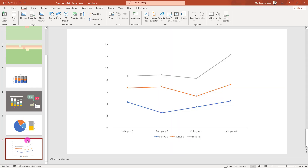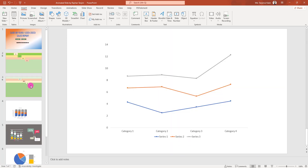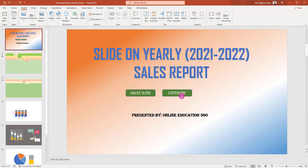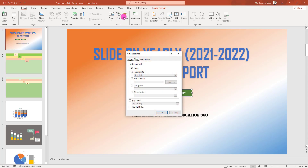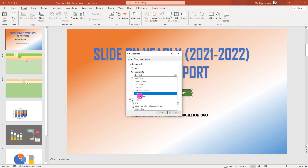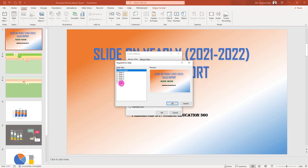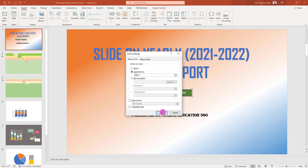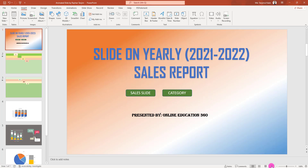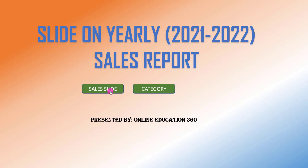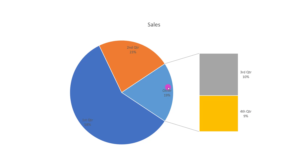For the 'Category' shape, click on it, go to Insert, then Action. You can use either Action or Link — both work. Click on 'Hyperlink to,' then click 'Slide,' select the target slide you want to navigate to, and click OK twice. Now in the slide show, clicking 'Sales Slide' will navigate to that sales slide.